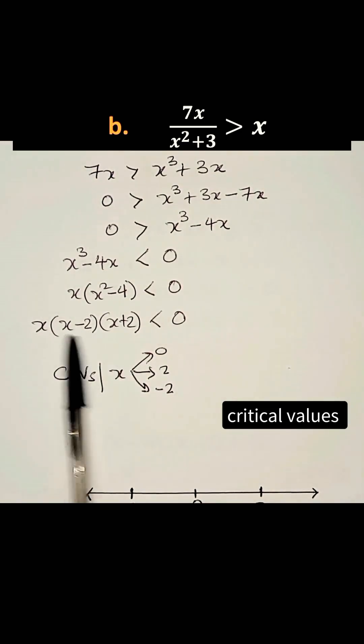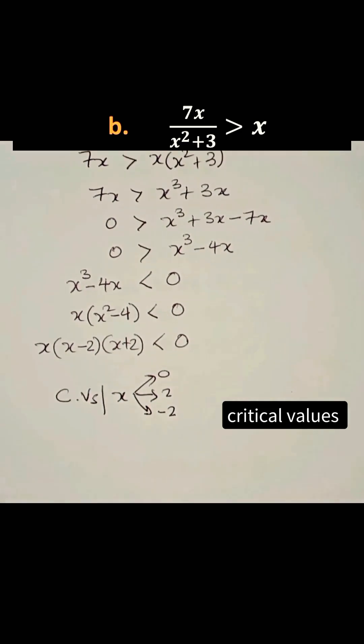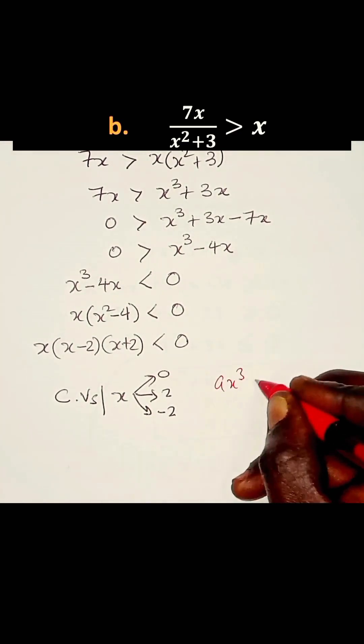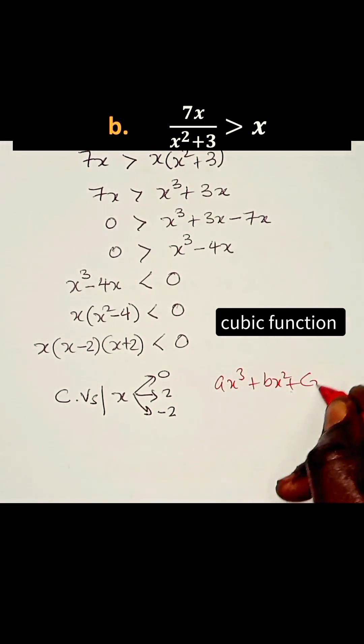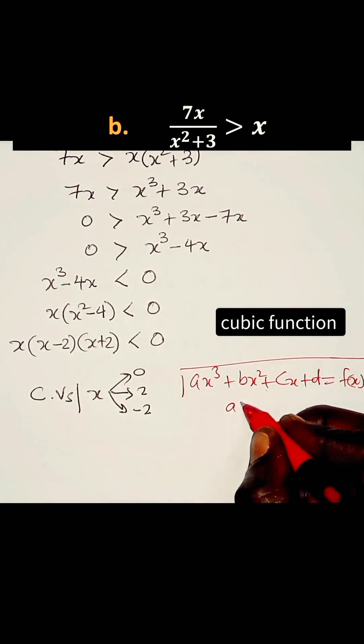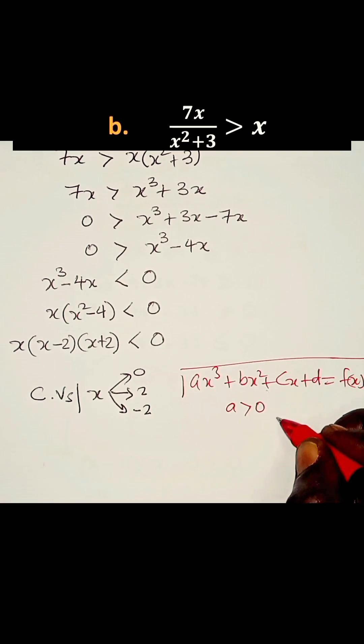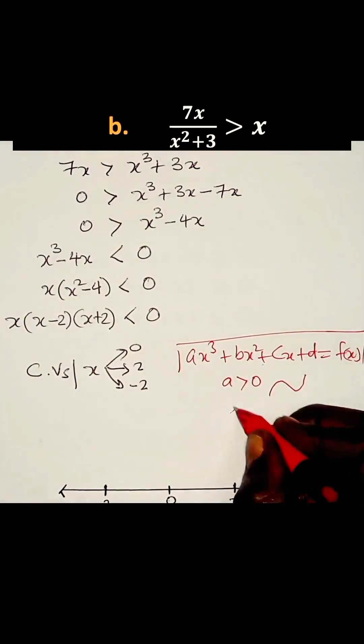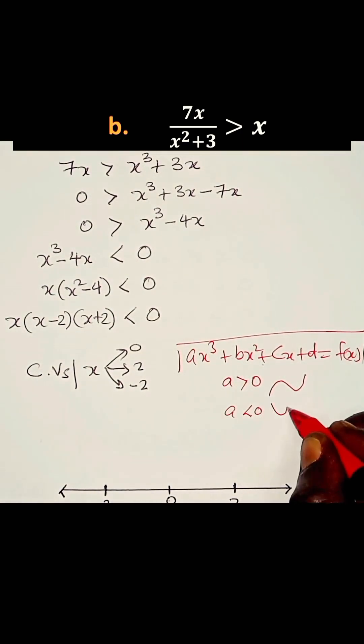Now this is a cubic function. You remember, for cubic functions of the form ax³ + bx² + cx + d, which we call f(x), when a is greater than 0, the graph has this shape. And when a is less than 0, the graph has that shape.